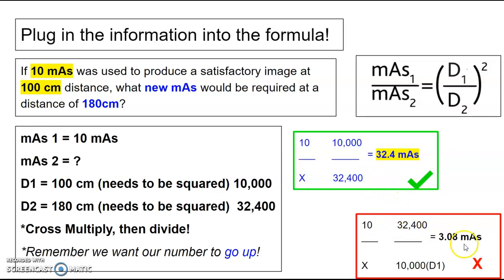This box down here shows you if you flip your distances, you're going to get a number that doesn't make sense, a number that goes down. So if you calculate this out and your number goes the wrong way, you're putting your distances or your mAs in the wrong location. So if your answer doesn't make sense, go back to your formula and make sure you put your factors in the right spot.